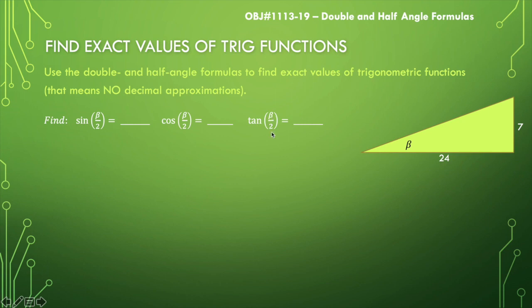All we know is we have this right triangle where we're trying to find the exact values of half of angle beta. So we're going to start by finding the trig functions of beta: sine of beta, cosine of beta, and tangent of beta.